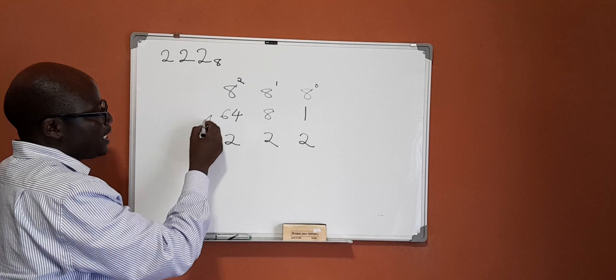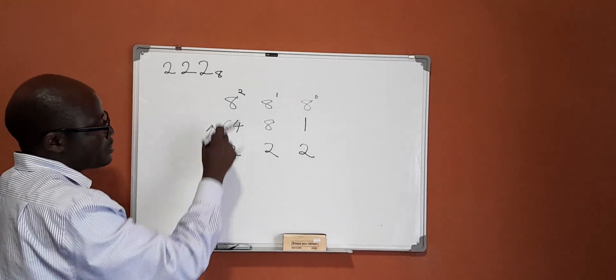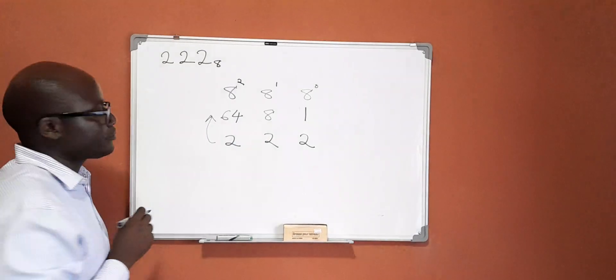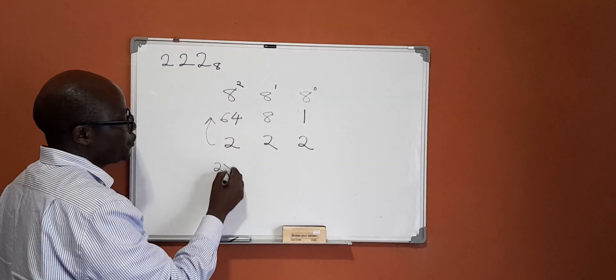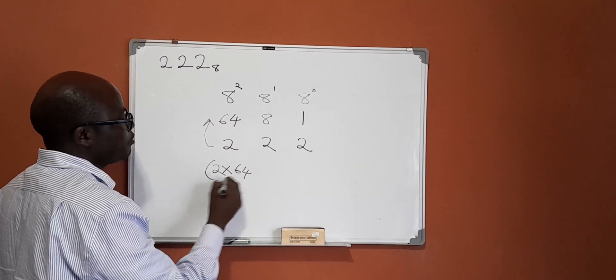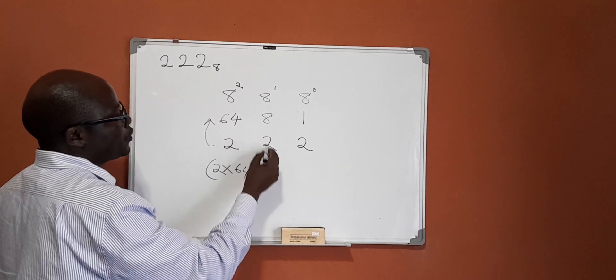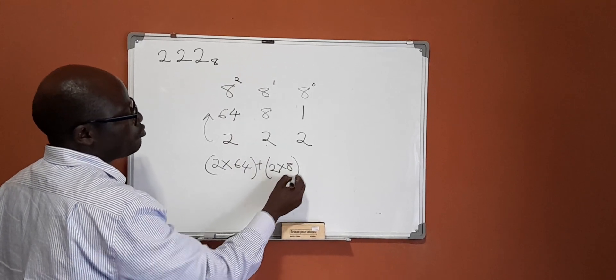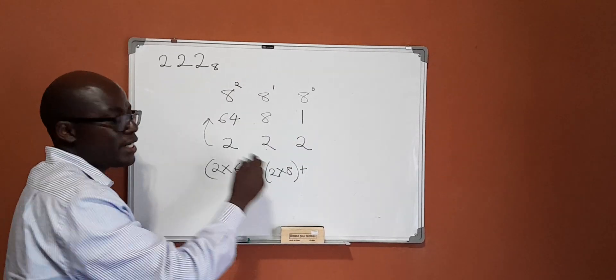We shall multiply these numbers by their place values. So this will be 2 times 64 plus 2 times 8 plus 2 times 1.